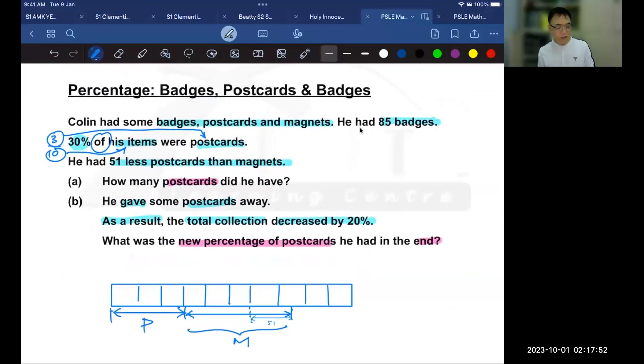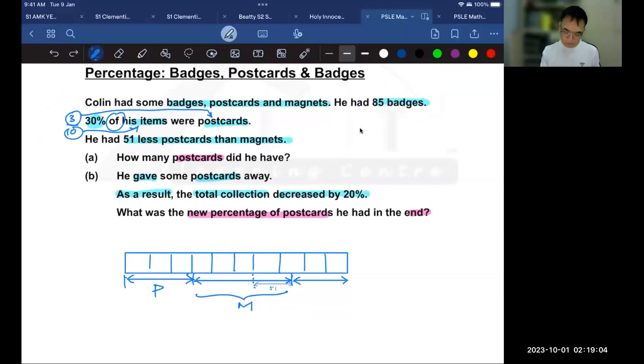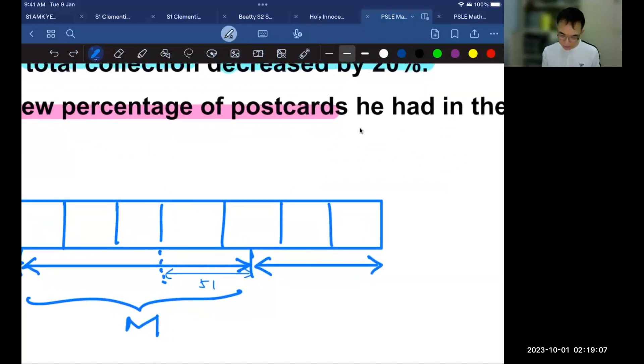Let's continue reading the question for other information. Now remember that there are 3 types of items here. The badges, the postcards and the magnets. I've drawn the postcards and the magnets. So all I have left are the badges. And that means this portion must be the badges. And the question says that there are 85 badges. So then this portion must be 85. So let's label that into the diagram. So since I have 85 badges, I'm going to write that over here. And these are the badges.